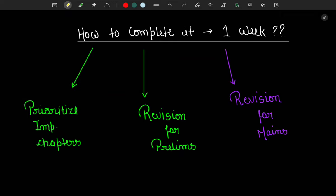Then comes the question: how to complete Rajiv Ahir's Spectrum in one week? First of all, we need to prioritize important chapters — it's not that we have to complete all of them. We need to prioritize which chapters to complete first. Then we go back to those chapters where fewer questions come from and which are harder to memorize. Then, revision — how to revise efficiently using active recall, PYQs, MCQs, and mock tests.